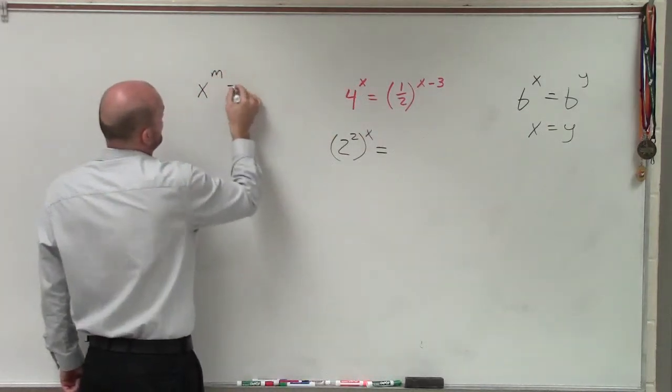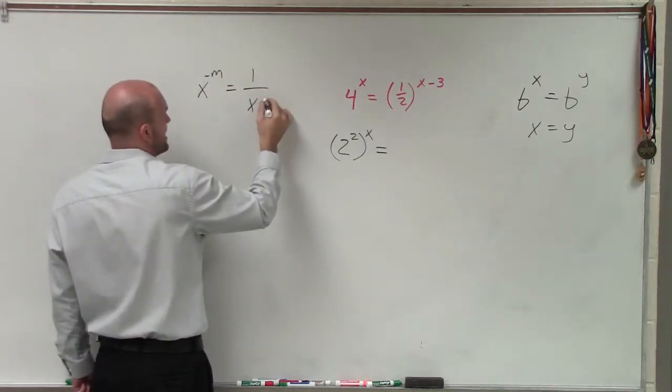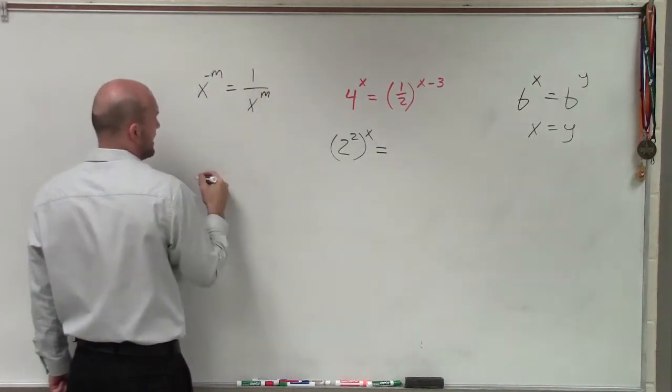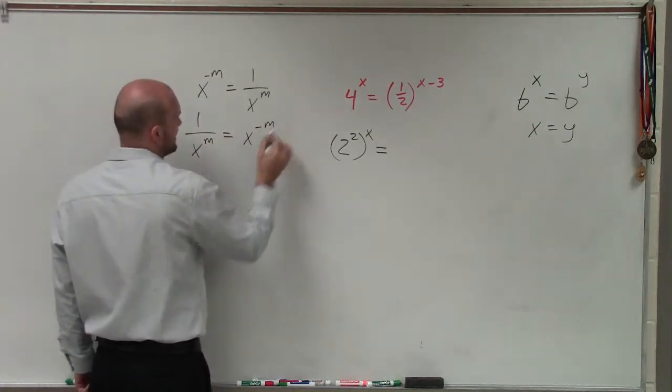Well, remember that x to the negative m equals 1 over x to the m. So therefore, 1 over x to the m equals x to the negative m.